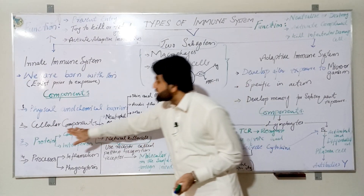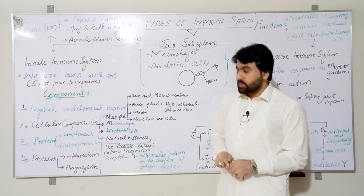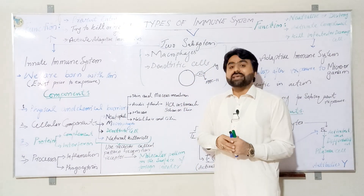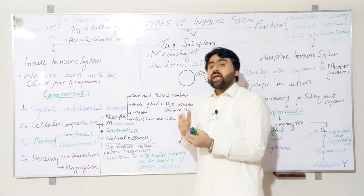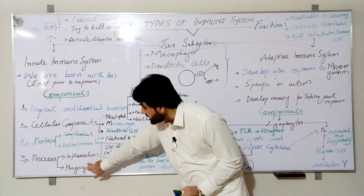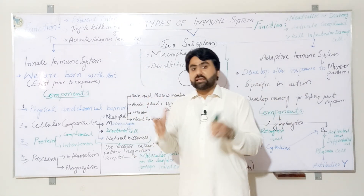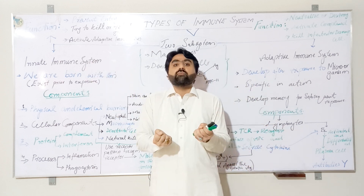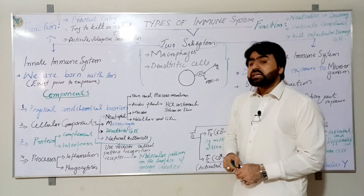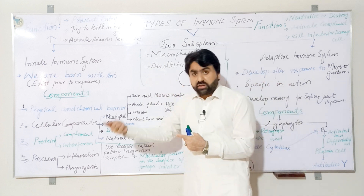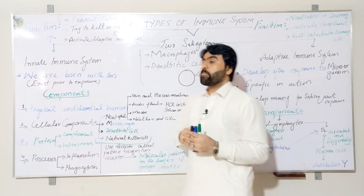In addition to protein components, these cellular components also perform cellular processes which include inflammation and phagocytosis. Neutrophils, macrophages, and dendritic cells are phagocytic in nature — when they recognize a foreign invader as non-self, they engulf and kill it. These activated cells also secrete substances that initiate an inflammatory response at the site of infection to attract different molecules and cells to combat the foreign invader. These four components together form the first and second lines of defense.